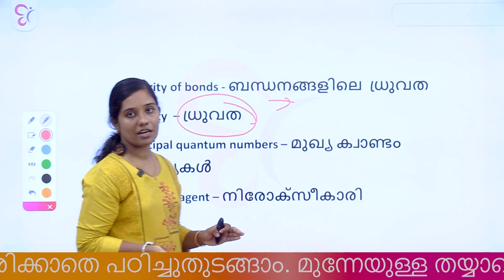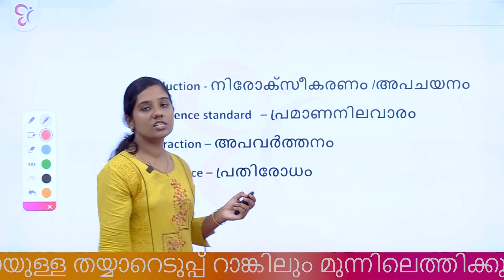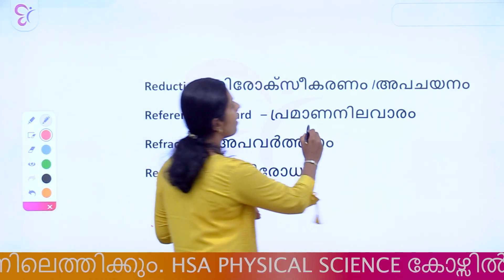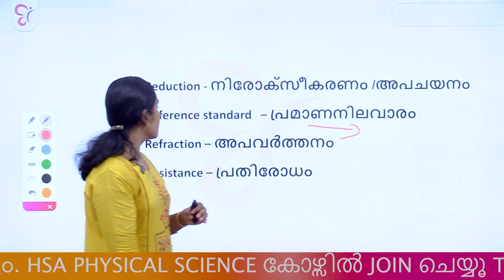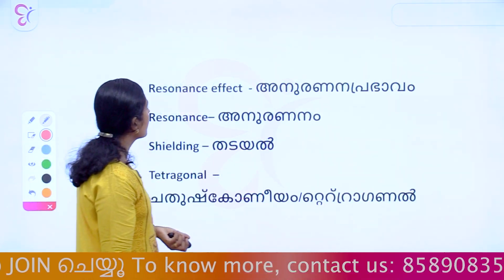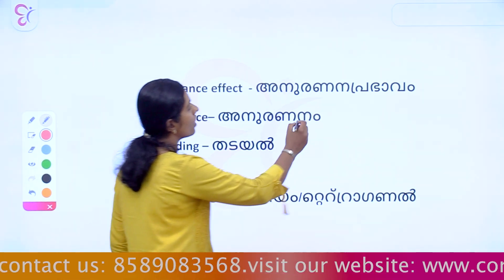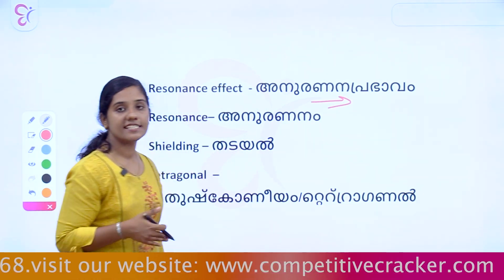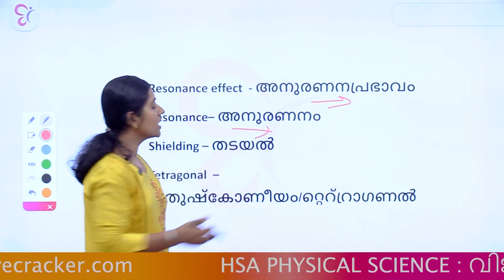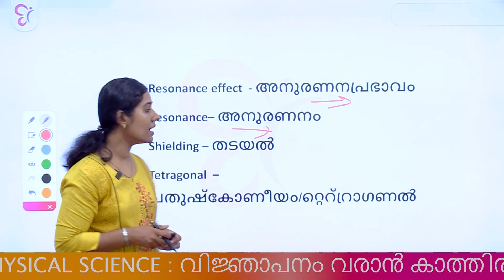Next is Polarity of Bonds and Principal Quantum Number. Then Reducing Agent, Reduction, Refraction, Resonance Effect, and Shielding Effect (Shob Guard).